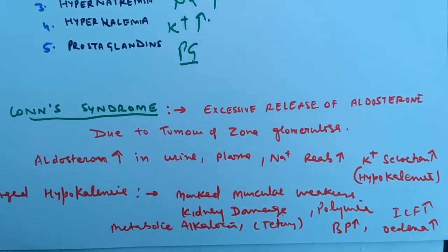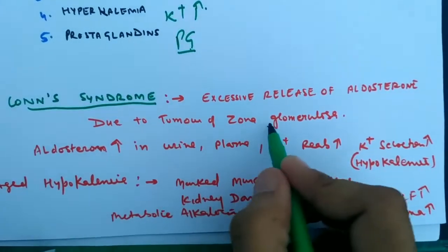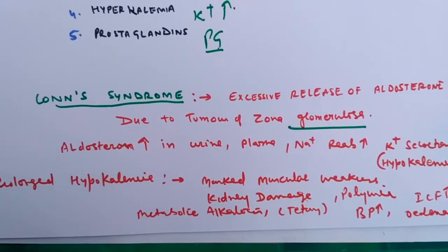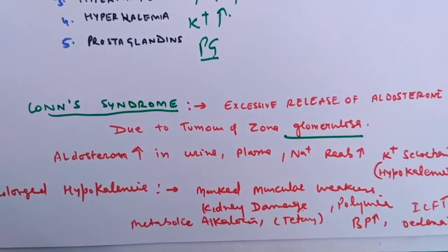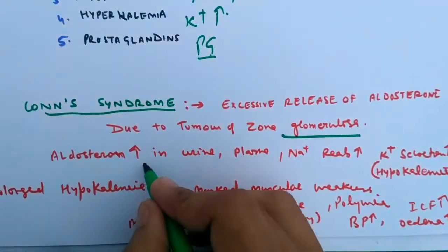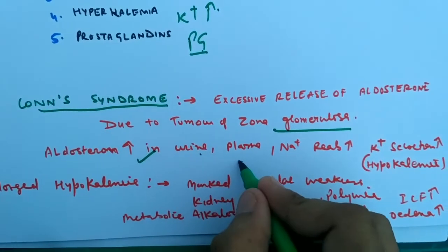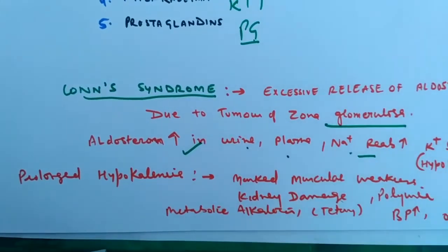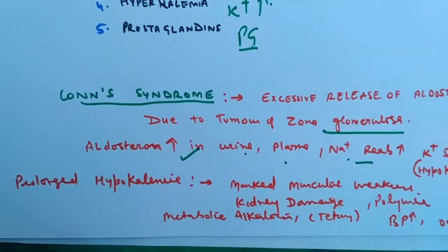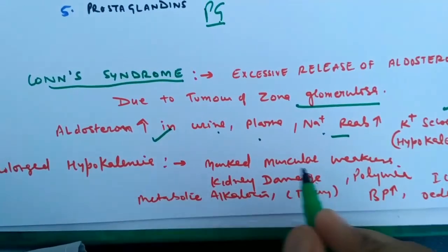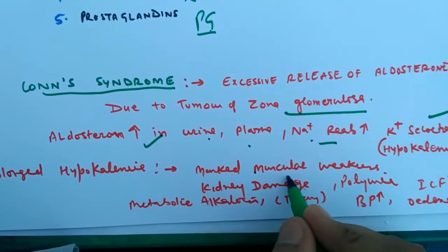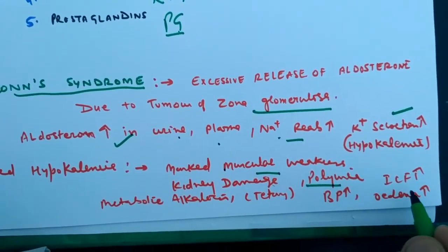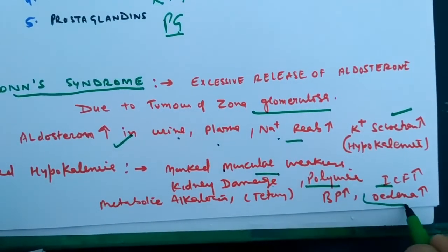There is a syndrome called Conn's syndrome, which is due to the excessive release of aldosterone caused by a tumor of the zona glomerulosa — the layer that is the source of aldosterone. It becomes hyperactivated and cancer occurs in this area, increasing aldosterone levels. Sodium reabsorption increases, potassium excretion increases, and blood potassium level decreases — called hypokalemia. Hypokalemia causes muscle weakness, kidney damage due to polyuria, increased intracellular fluid, and edema.